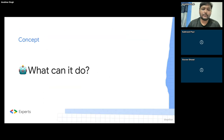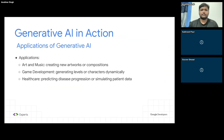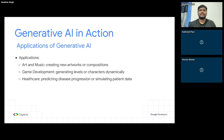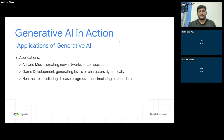Let's move to the next part — what can generative AI do for you? These are some of the most popular examples. Let me take examples from you all. If you have used ChatGPT or Google Bard, let me know in the chat what you have done with it — if you've tried to create something, asked for a leave application, anything at all. Let me see some use cases from your side.